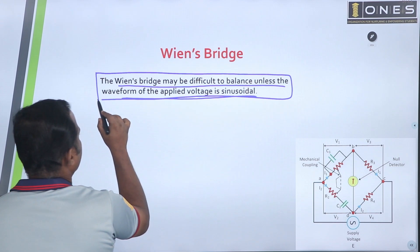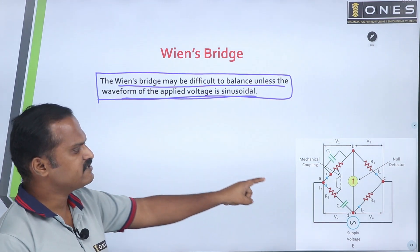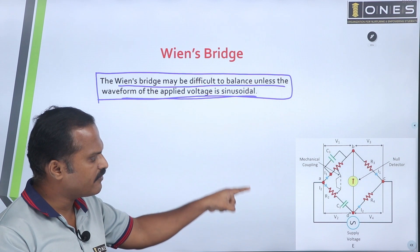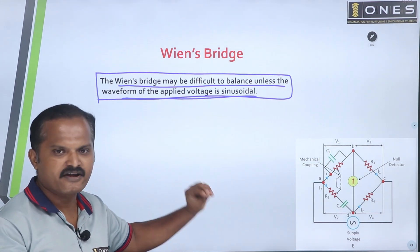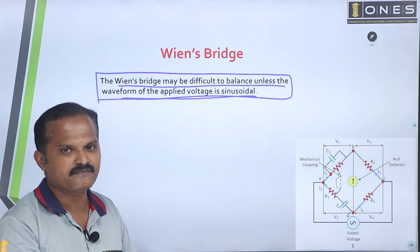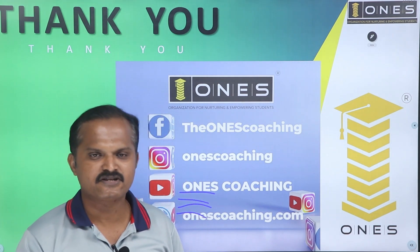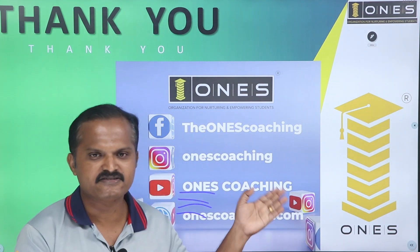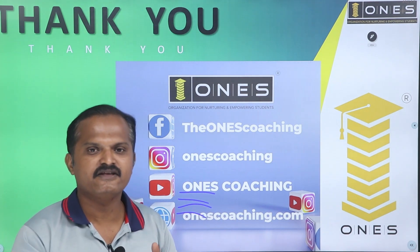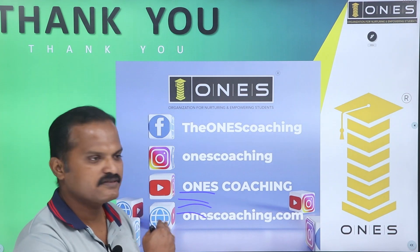The main bridge may be difficult to balance unless the waveform applied is sinusoidal. We use a filter circuit to eliminate harmonics. The balance condition uses a null detector. This is the main limitation of Wein's bridge. The balanced equation is set 1 times set 4 equals set 2 times set 3, from which we derived the frequency equation.